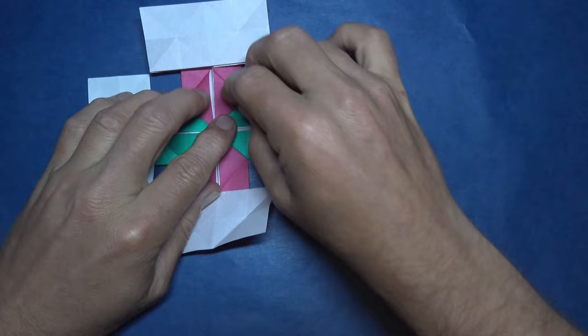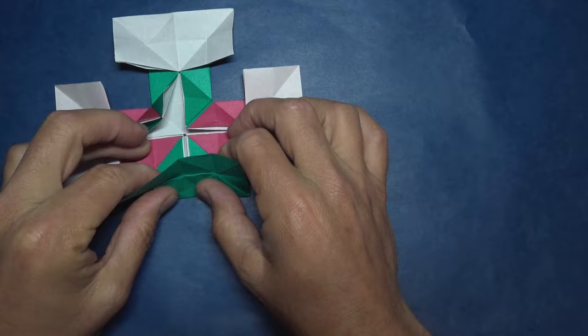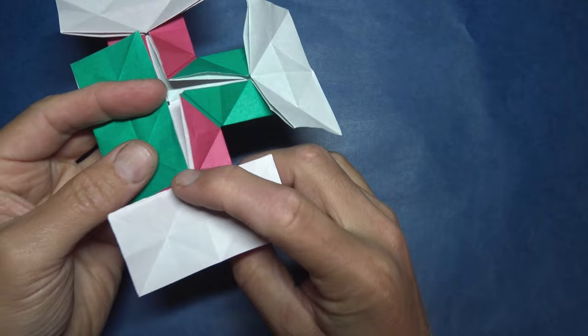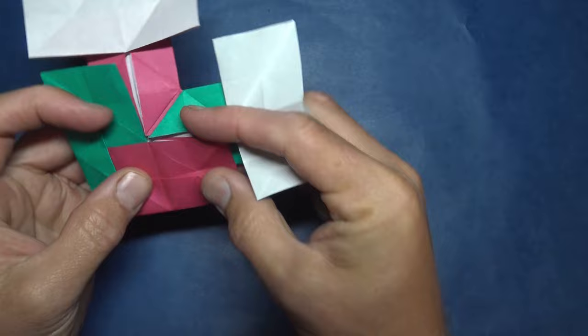And crease sharply. Now fold this up like this. And rotate. And fold this one up and insert this flap underneath like this. And rotate.